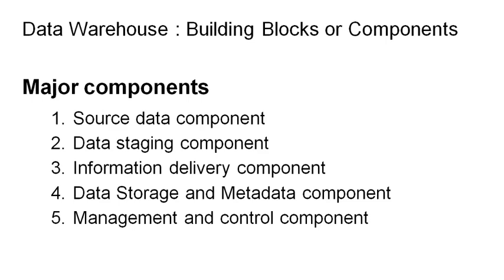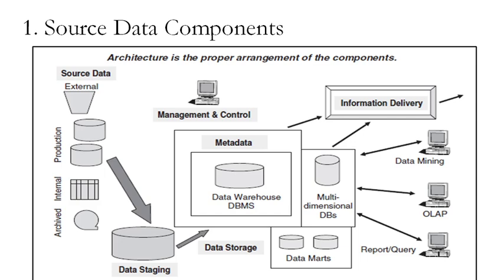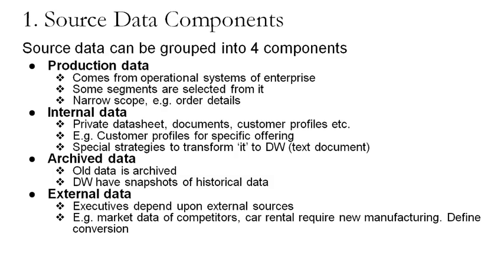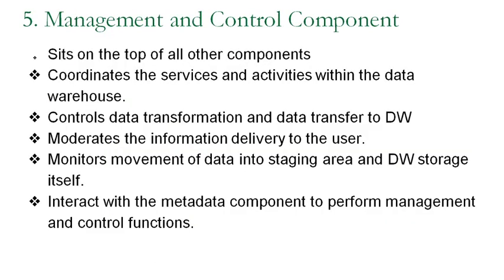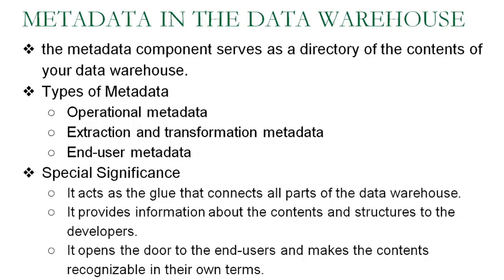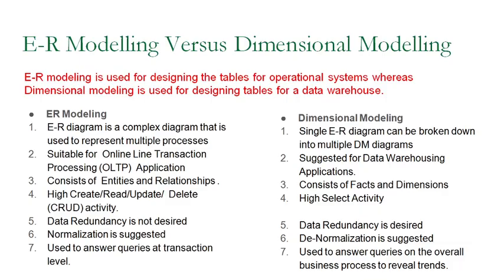Hello students, welcome to this video. In previous few videos, we have seen the building blocks or components of data warehouse. There are basically 5 components: source data, data staging, information delivery component, data storage, and metadata, and the management and control component. We have seen these things with the help of a diagram. We also saw the role of metadata in the data warehouse, which are the users, and the different types of metadata.